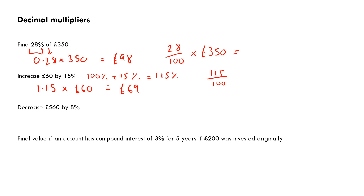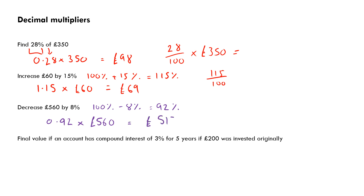Next, a decrease of 8%. Starting with 100% and removing 8% leaves 92%, so the decimal multiplier is 0.92. Multiplying 0.92 × £560, my answer should be lower than £560. The calculator gives 515.2, but since this is money I need to write it as £515.20 to show pounds and pence.